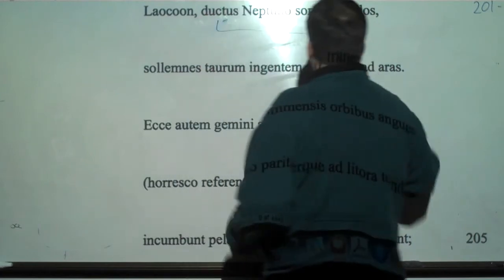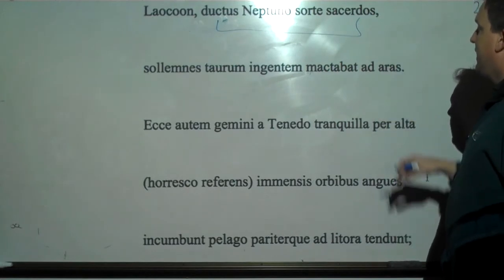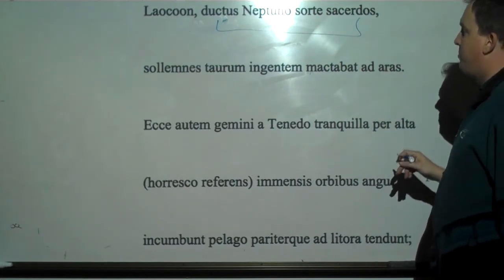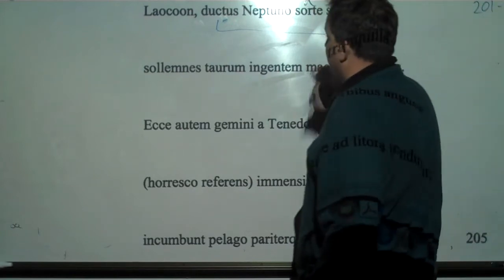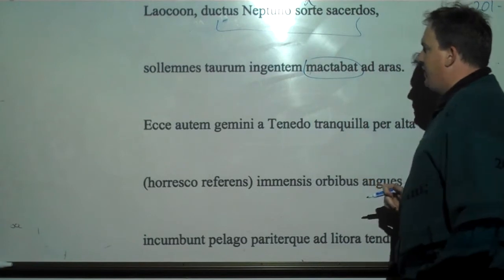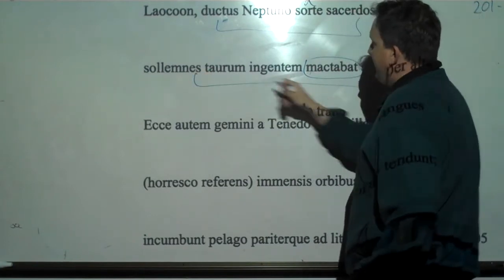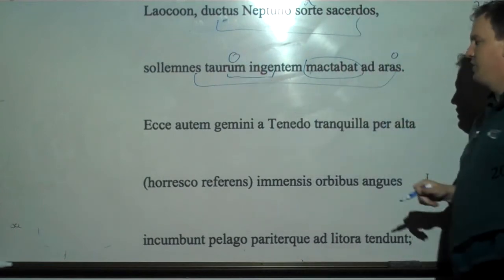So Laocoon, ductus goes with Laocoon or sacerdos. Having been selected as a sacerdos, as a priest for Neptune by lot, this is setting the scene of the thing. It was sacrificing at the solemn altars ingentem taurum, a great bull, or near the altars.